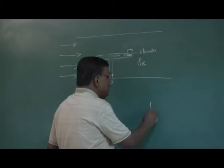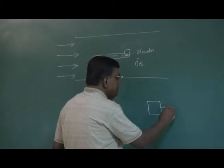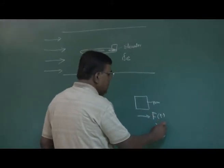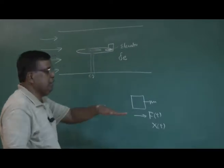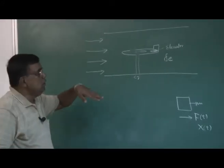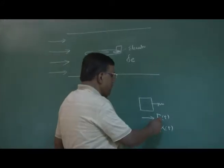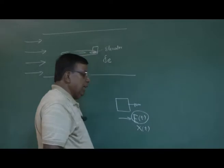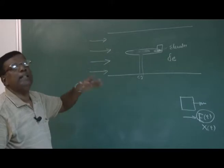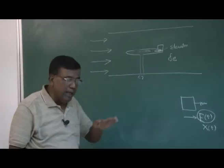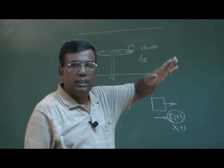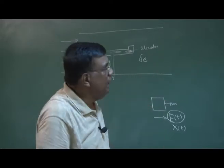For a mass-spring-damper system, we talked about force f(t) and linear motion along the x direction. Here the difference is angular motion. So whatever the forcing function was doing as a force, here that force is replaced by the moment — the moment about the y axis, which is called the pitching moment.